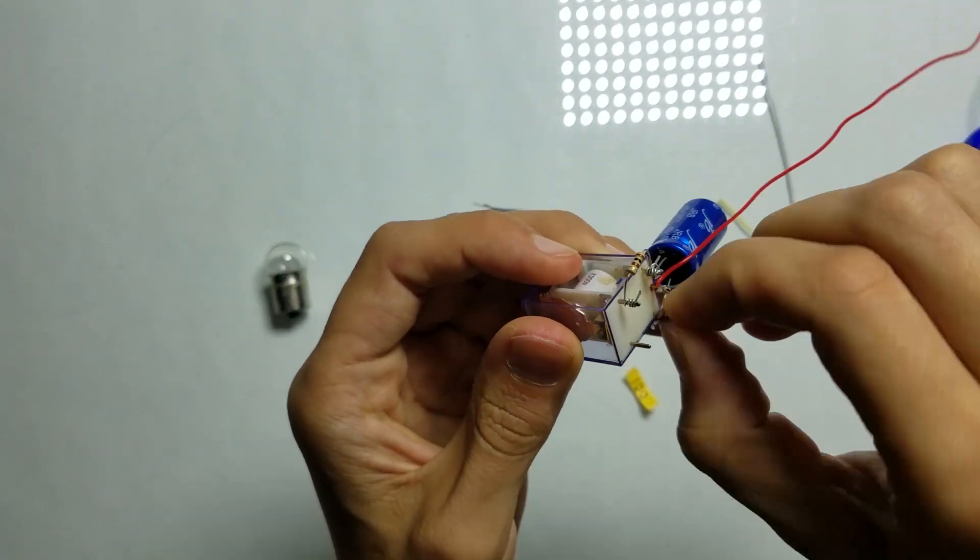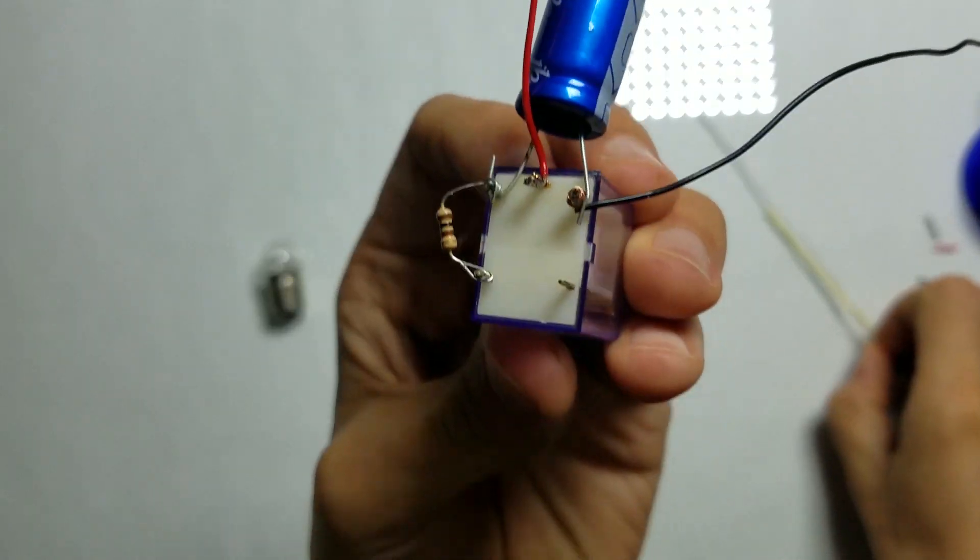And it's probably time to connect the black wire. We need to connect it to the coil lead of the relay.